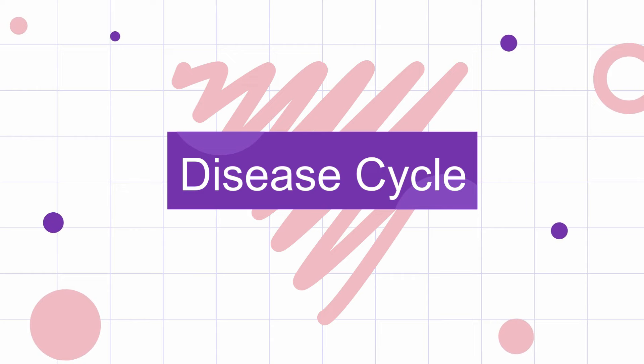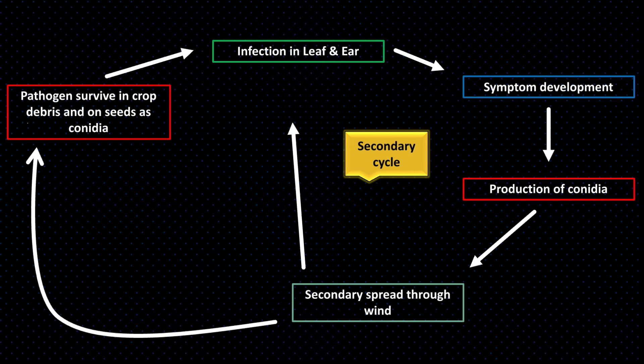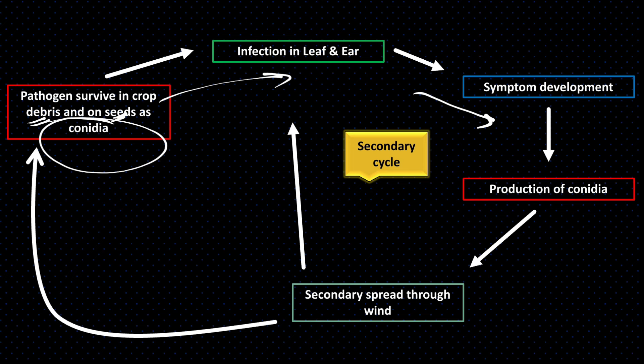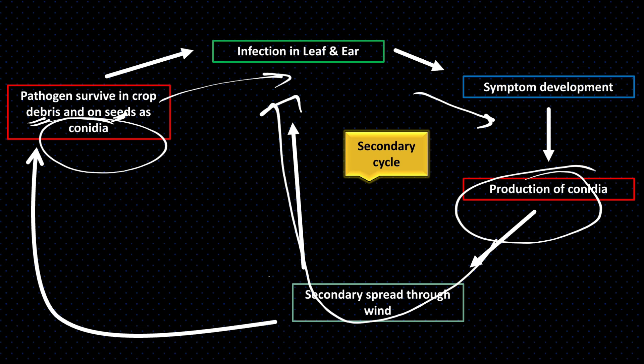Disease cycle: Pathogen survives in crop debris and on seeds as conidia. Conidia infect leaves, ears, stems, and glumes (primary infection). Pathogen grows in plants producing symptoms, then forms more conidia that spread by air to other plants (secondary infection cycle). When crop ends, conidia survive in crop debris for the next season.